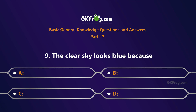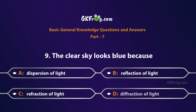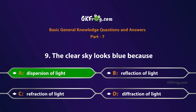The clear sky looks blue because of: A. Dispersion of light, B. Reflection of light, C. Refraction of light, D. Diffraction of light. Correct answer is A. Dispersion of light.